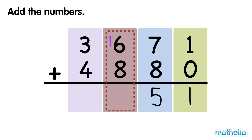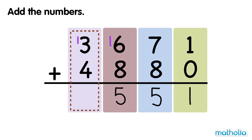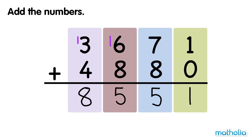Regroup 15 hundreds into 5 hundreds and 1 thousand. Finally, add the thousands: 1 thousand plus 3 thousands plus 4 thousands equals 8 thousands. So 3,671 plus 4,880 is equal to 8,551.